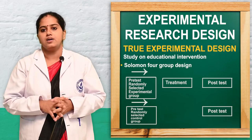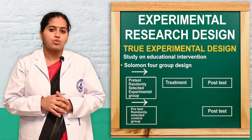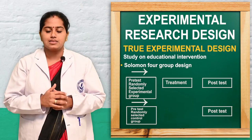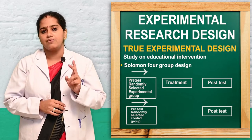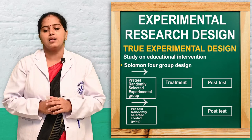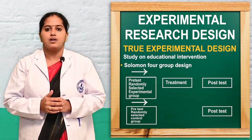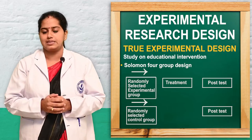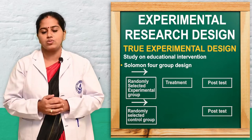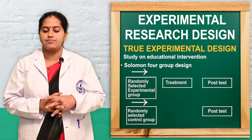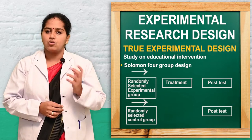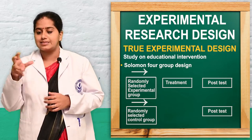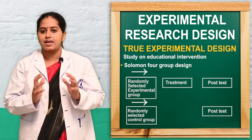The next is Solomon four group design, which uses four groups and a larger population — mostly used in medical field studies. Group one: pre-test, intervention, post-test. Group two: pre-test, no intervention, post-test (control). Group three: no pre-test, intervention, post-test. Group four: no intervention, no pre-test, then post-test. By comparing groups with and without pre-tests, any interference or pre-test threat in the research can be easily identified.